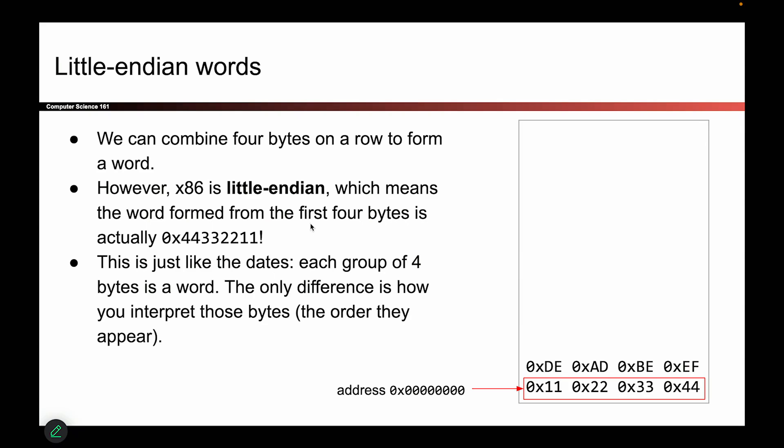And it turns out x86, which is what we will use in this class, is Little Endian. So what that means is when you have this sequence of four bytes, you should start by reading from the very top address. This is your most significant byte. So it's the byte that starts up here. So when I want to read these four things as an integer or a word, what I will do is I'll start by reading the 44, and then the 33, and then the 22, and then the 11.